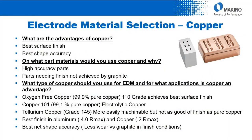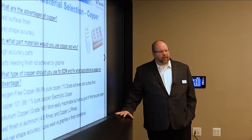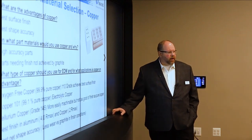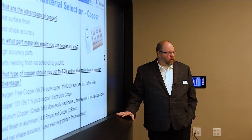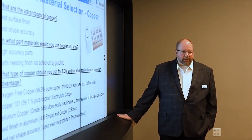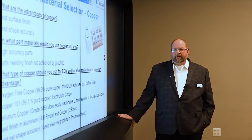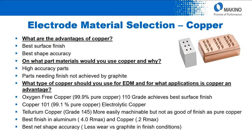Looking at copper as an electrode material: the best surface finish you'll ever get is with copper. If surface finish is your number one goal, use copper — it also gives best shape accuracy due to low wear on the finish side. Graphite is very high in wear as we get to better finishes, with settings as high as 100% wear at fine finish. On the copper side, wear is only about 5% — just 5% of a couple of microns — which is where the best shape accuracy and high-accuracy parts come in.